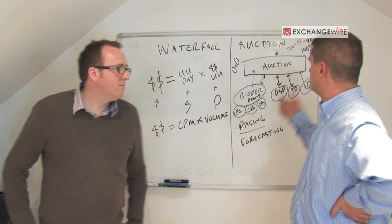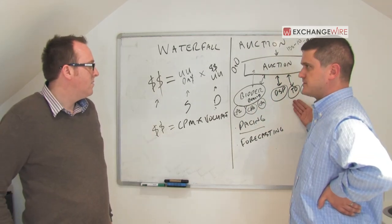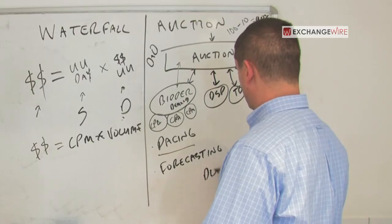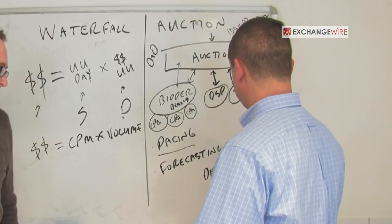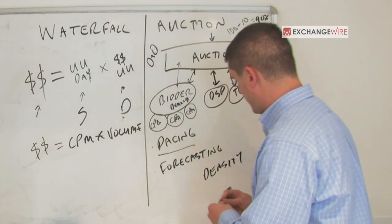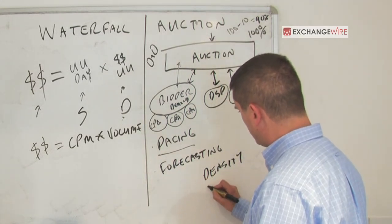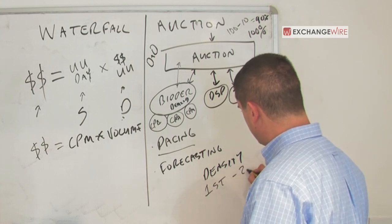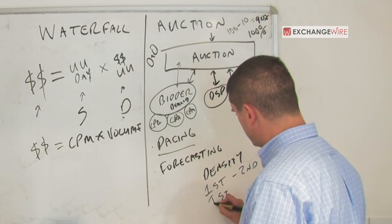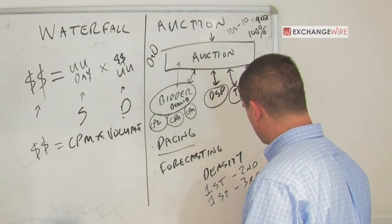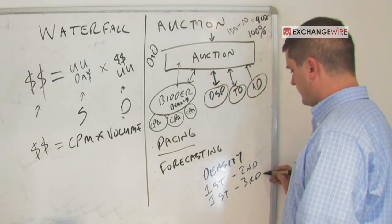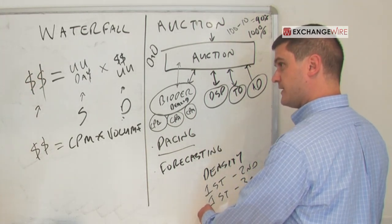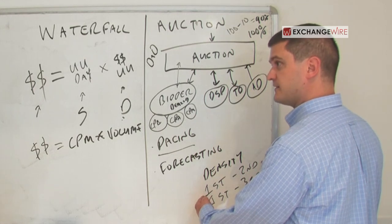How many orders you have running in the system, bid density per impression. We like to look at key metrics: density per impression, as well as essentially the difference between the first price and the second price, or a little more robust one is the first price and the third price. Because if you manage your demand and essentially you seek to narrow the gap between the first and third price, it's pretty robust with respect to the second price auction.